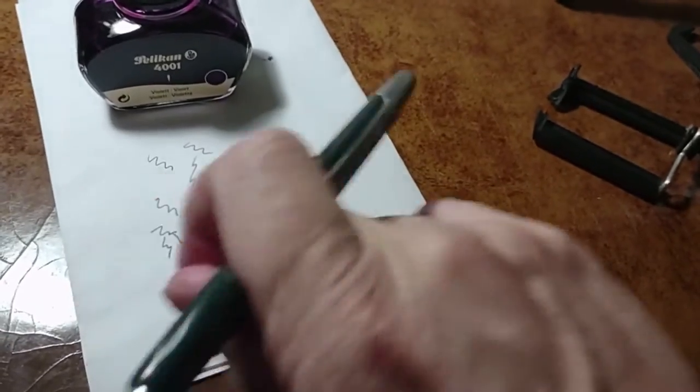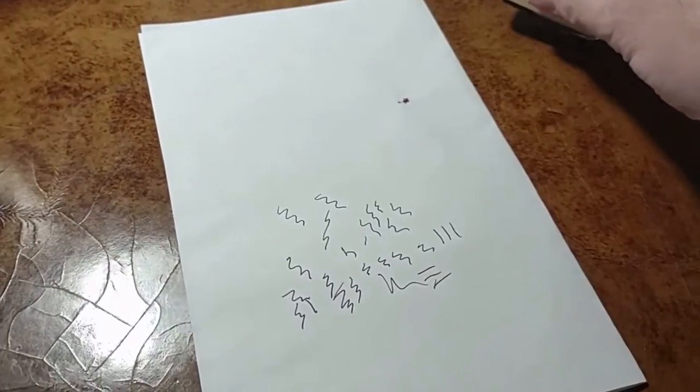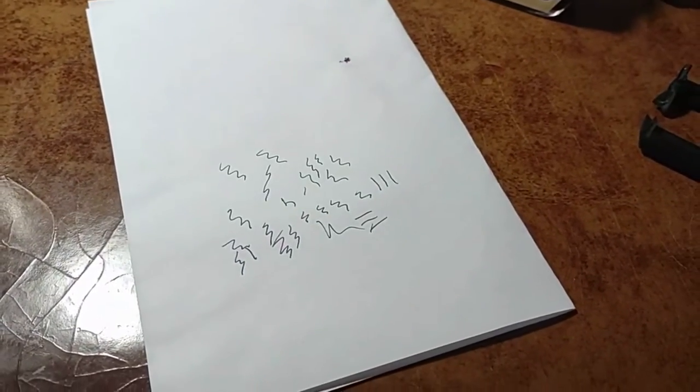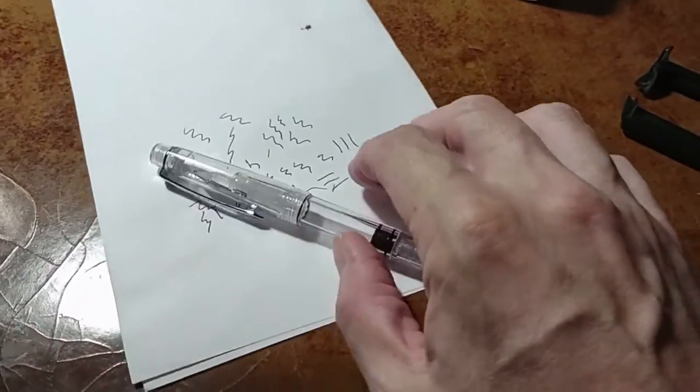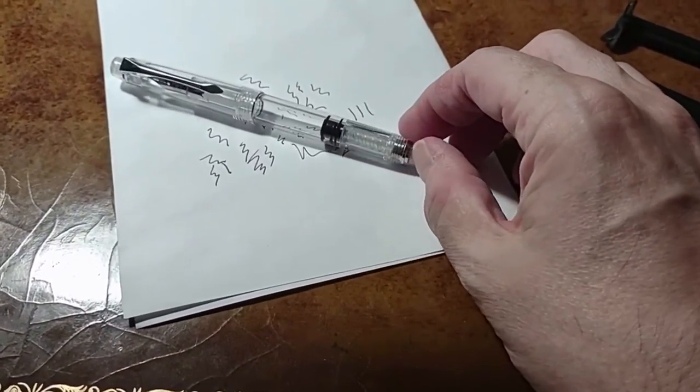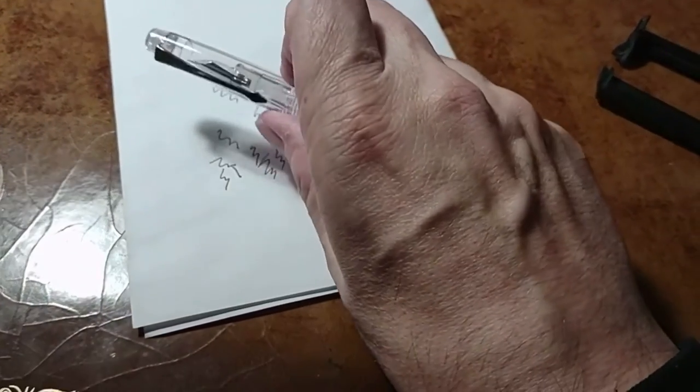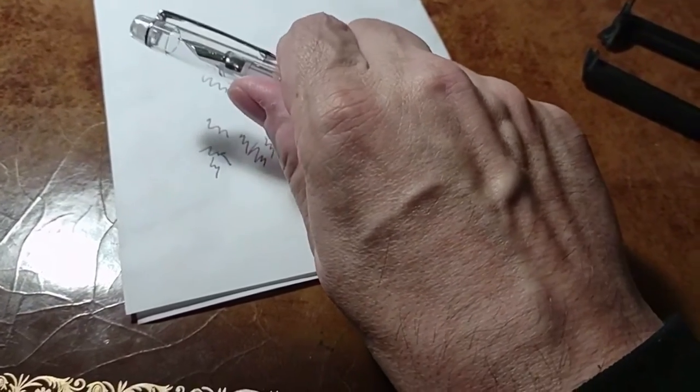So anyway, just show you the other two things that came in, which I haven't inked. This is a PenBBS 494, and it's a piston filler and obviously a demonstrator.